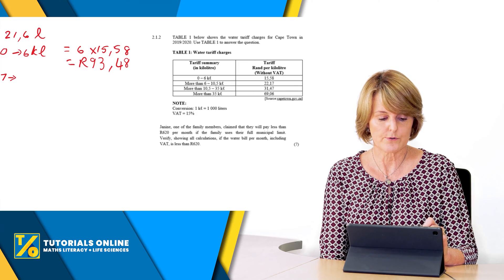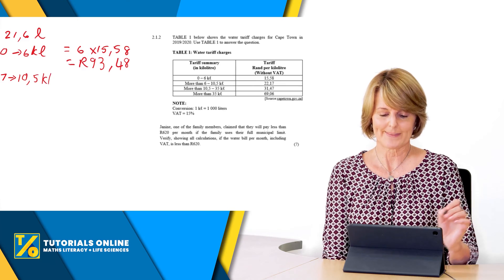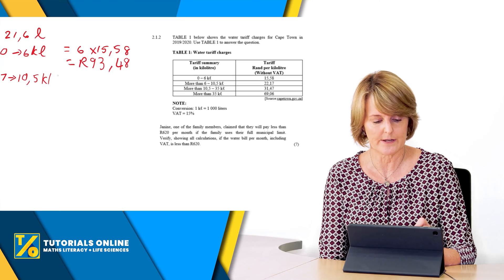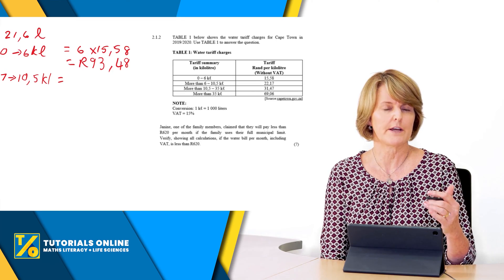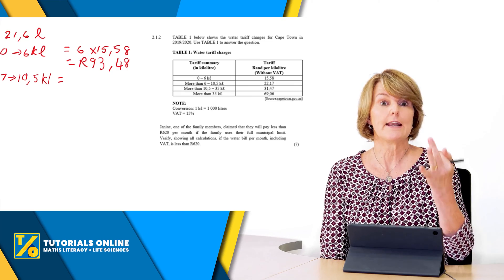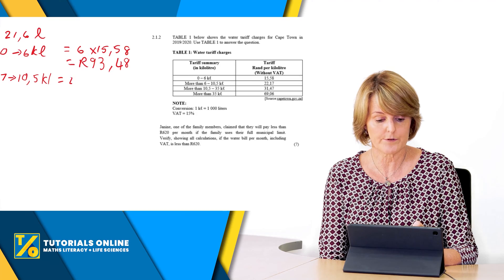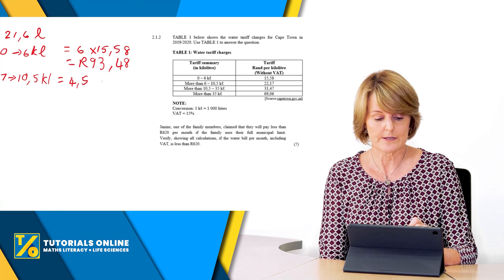Now we're going to the next category, seven to 10.5 kilolitres, and now we see the price has gone up, it's 22 rand 17. But how many kilolitres are from seven to 10.5? Seven, eight, nine, ten and a half, so it's four and a half.